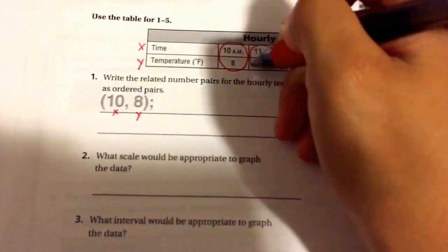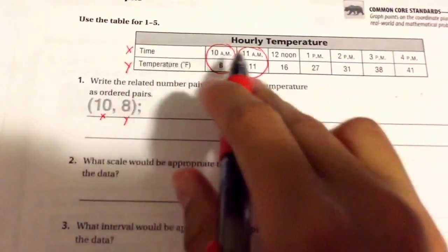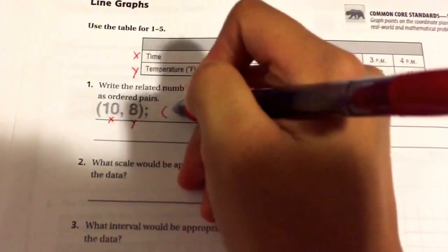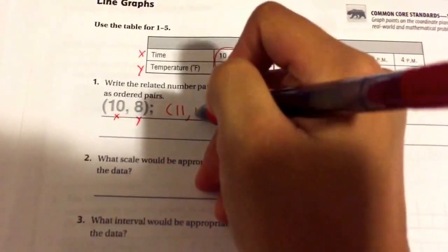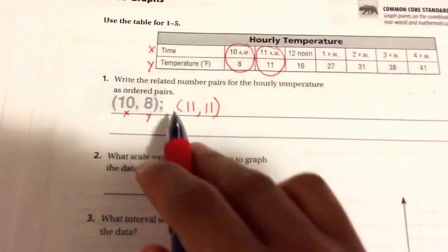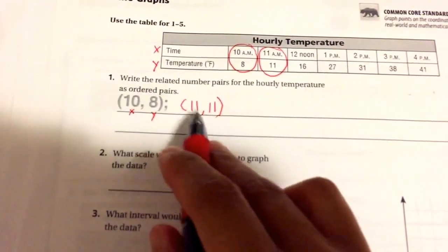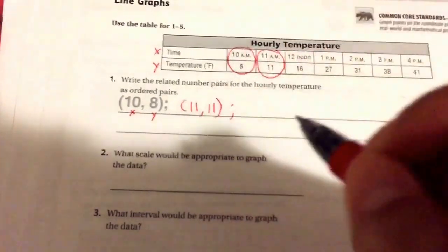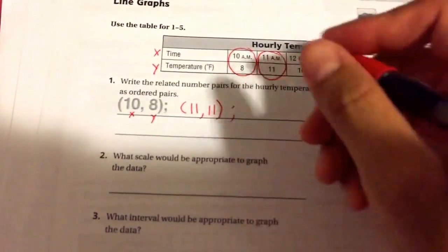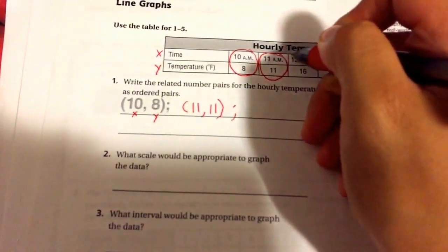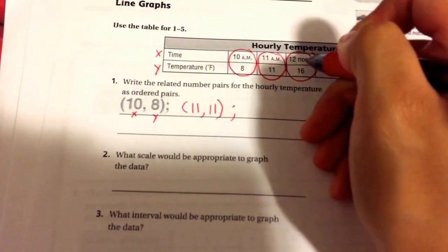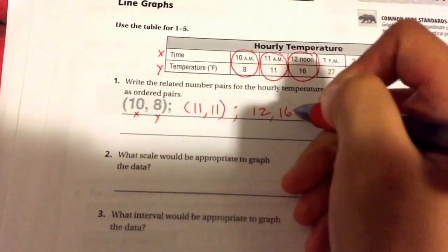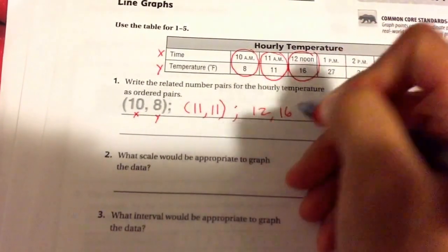So our next one will be, our x will be 11, which is our first number. We'll have a comma and 11. So 11, 11. Keep in mind that ordered pairs are separated with a comma and put into parentheses. We're going to separate this answer by putting a semicolon, which looks like a comma and a dot sticking on top, before putting our next one. Here is our x and our y. 12 is our x, 16 is our y. At noon it was 16 degrees Fahrenheit.